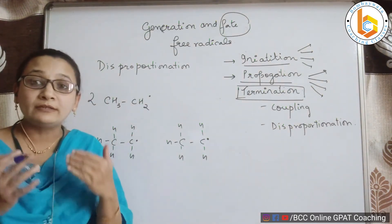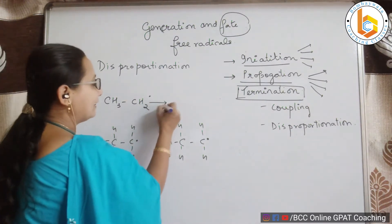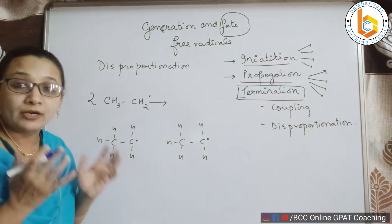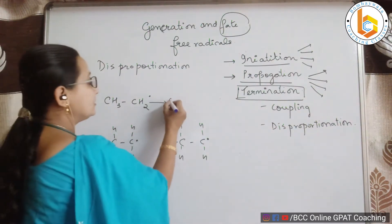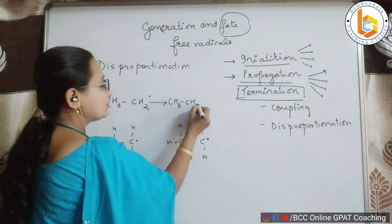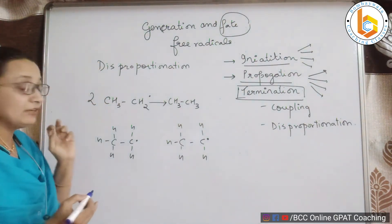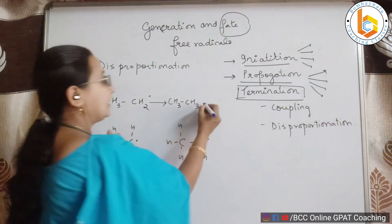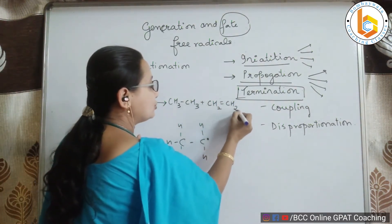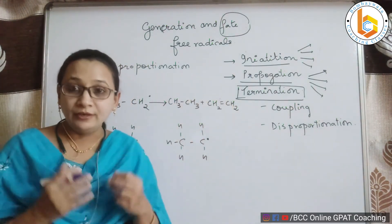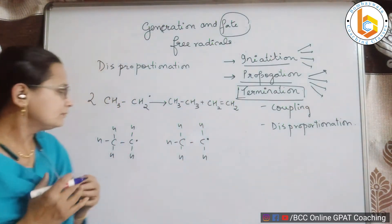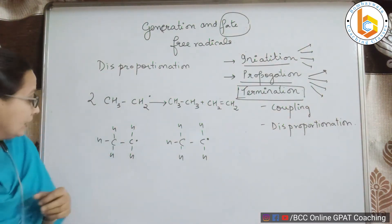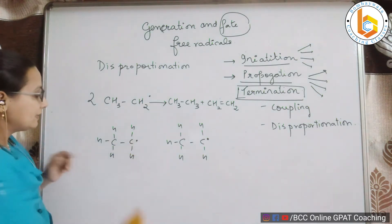Now what is the product that I expect? Let me first tell you the direct products, then I will show you how they are formed. I can get one CH3CH3, that is ethane, and one more product which I can get: CH2=CH2, that is ethene.